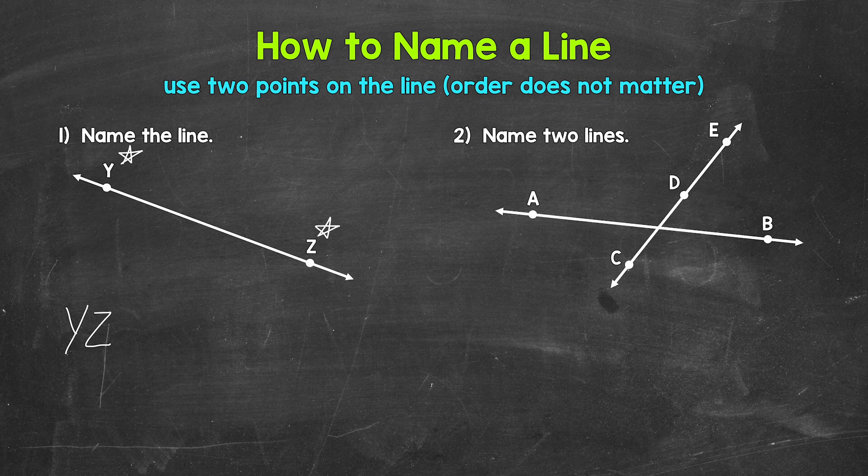And remember, when we name points, we use capital letters, so we need capital letters here. And then we put the symbol for a line above. Those arrows show us that we have a line.